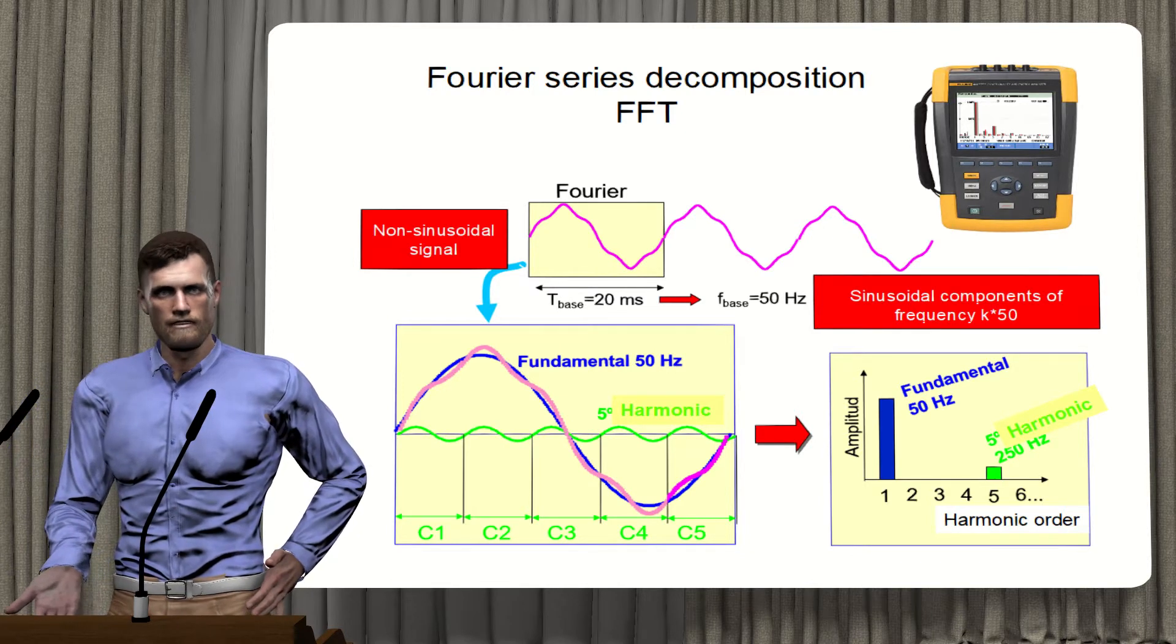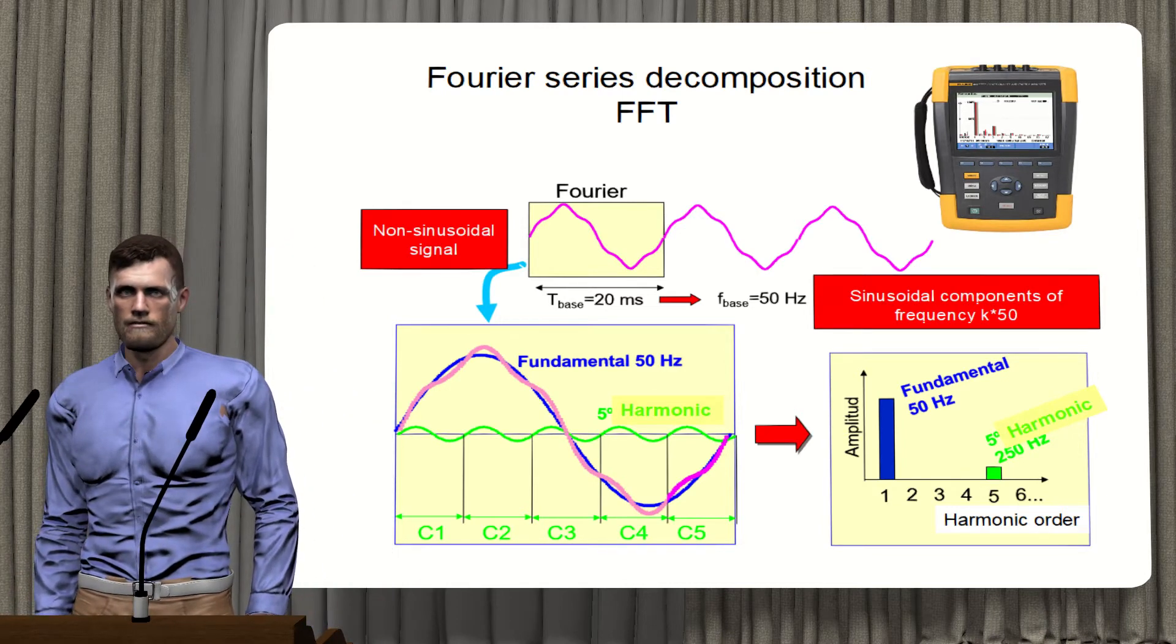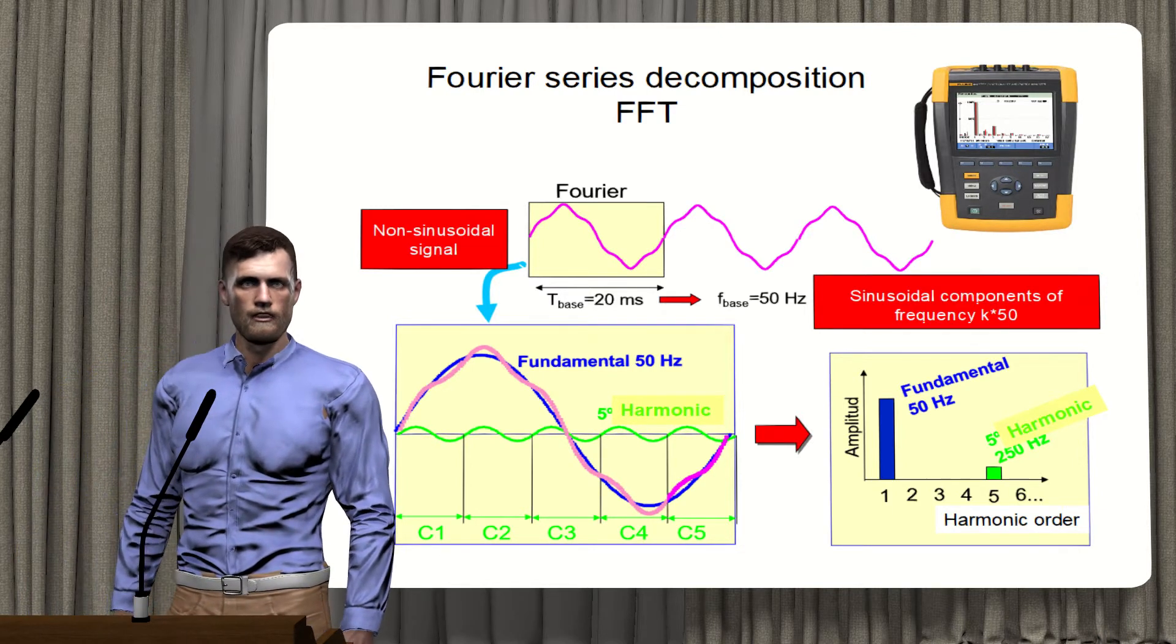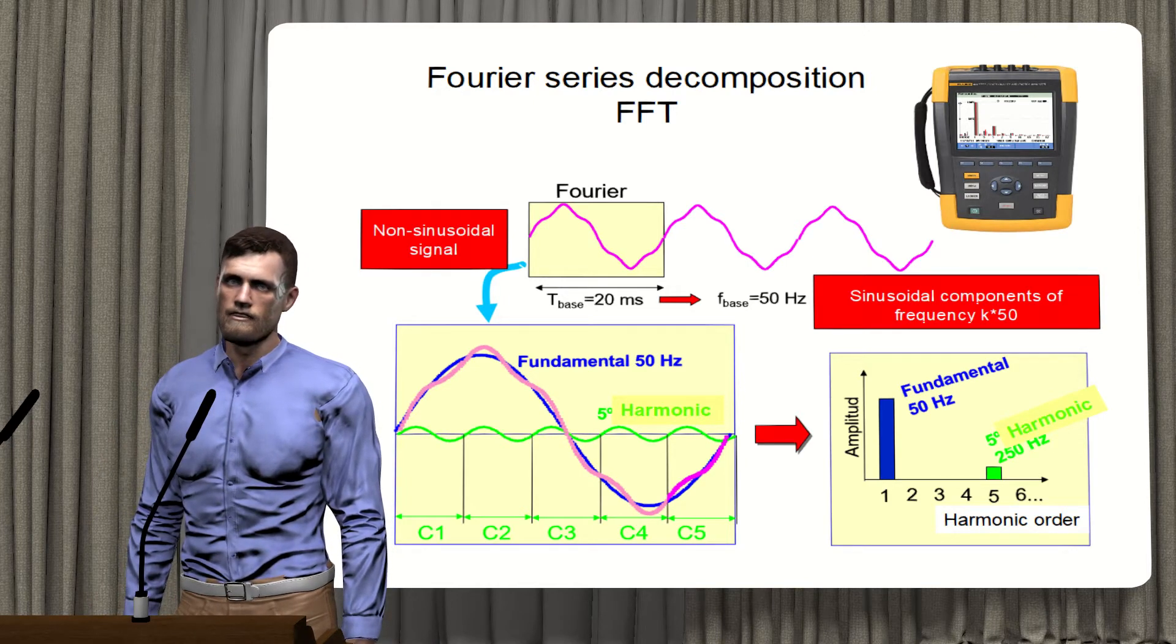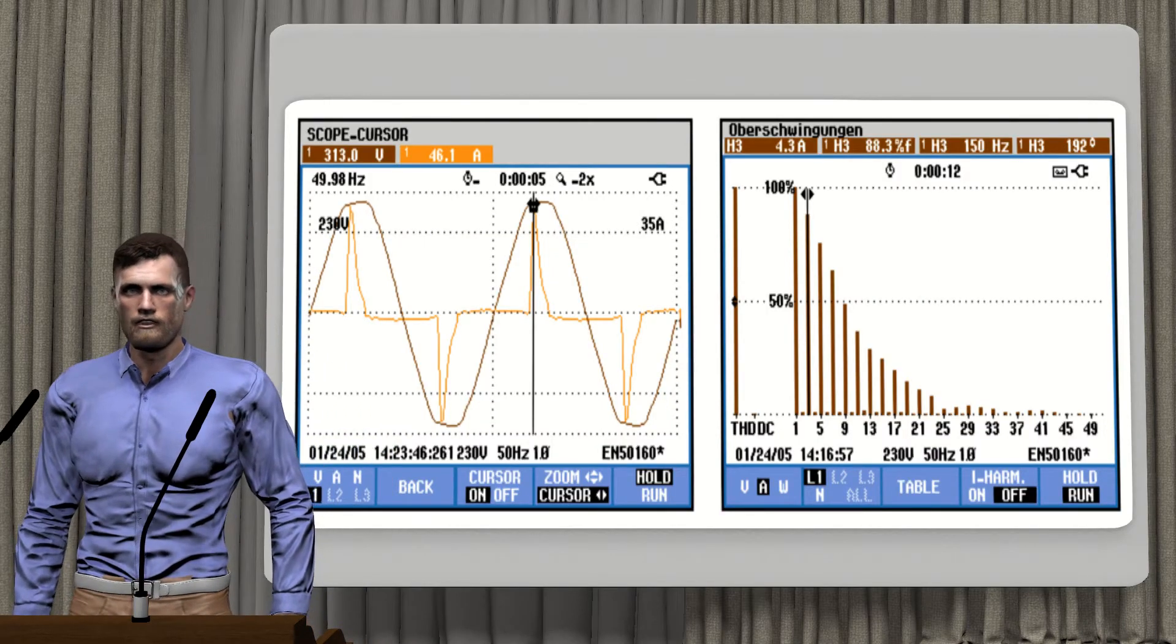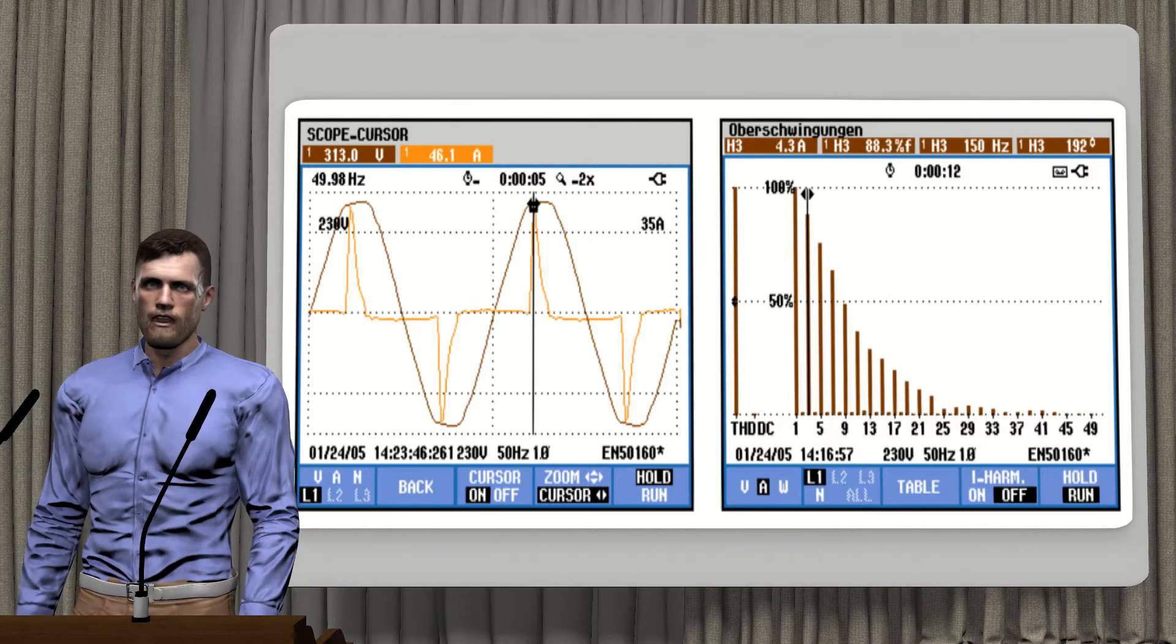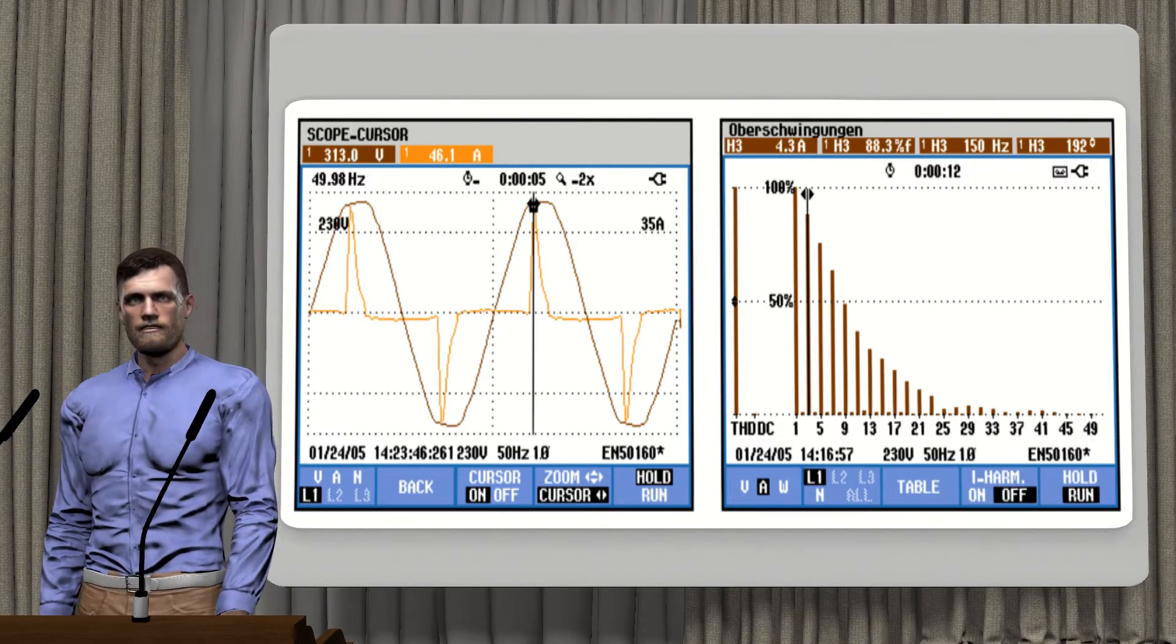These effective values can be represented in a typical bar graph where a number called order is shown on the horizontal axis, which for the fundamental component is number 1, for the harmonic of 100 Hz is number 2, for the harmonic of 150 Hz is number 3, and so on. And the vertical axis represents the effective value of the fundamental component and the harmonics, either in absolute value, for example in volts or amperes, or as a percentage value, where the fundamental component would take the value of 100%, and the harmonics a percentage value in relation to the fundamental component.